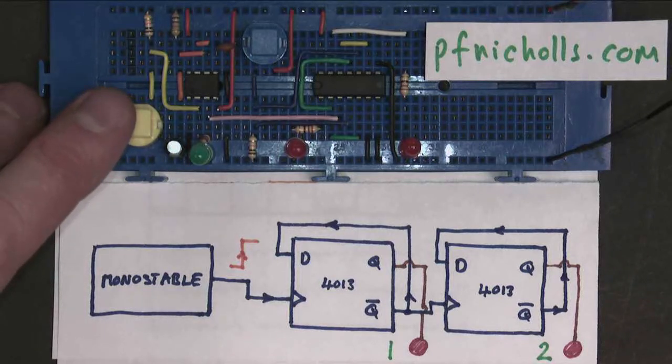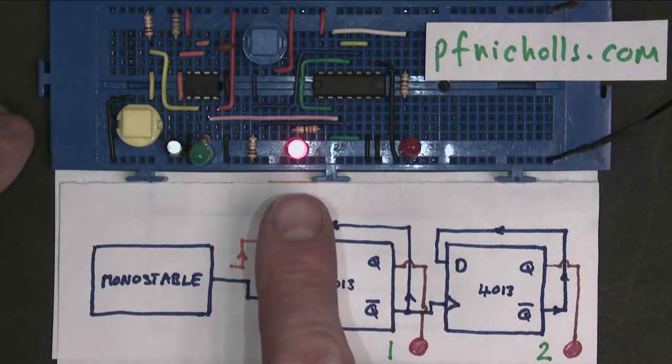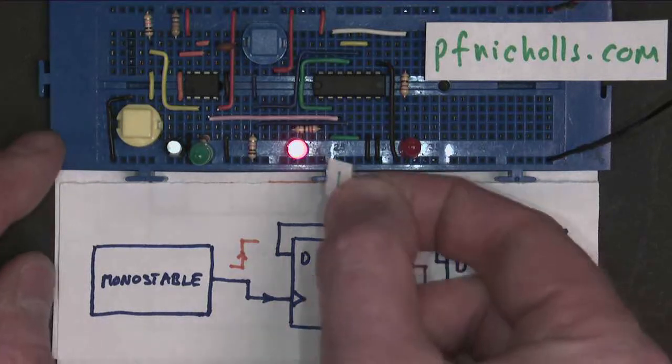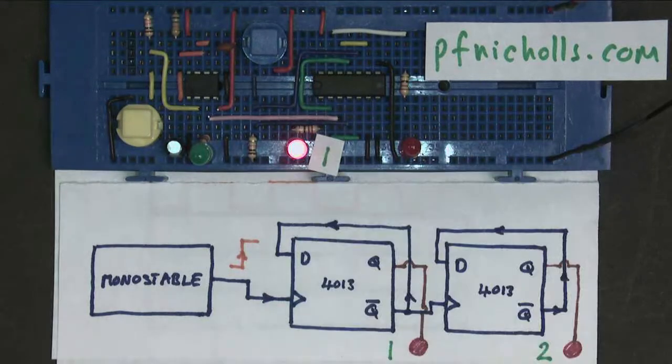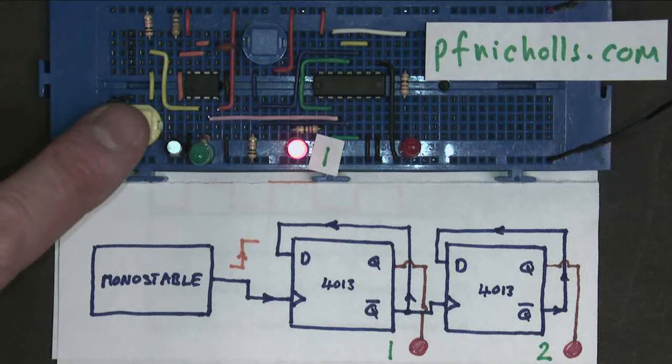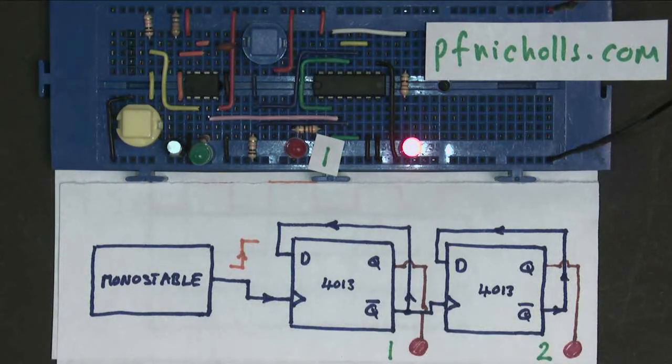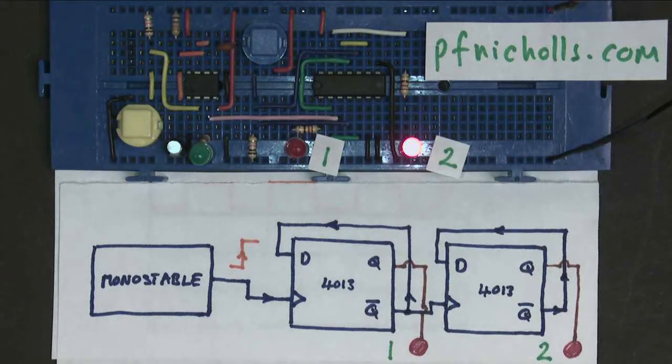So I'm going to press the button once, and what you can see is that my first LED has come on. So that means I've counted a total of one. So I'm going to label that LED as the number one. And if I press the button again, this will be the second press. So now I've got two. So now this LED has come on. So this is the LED which represents the number two.